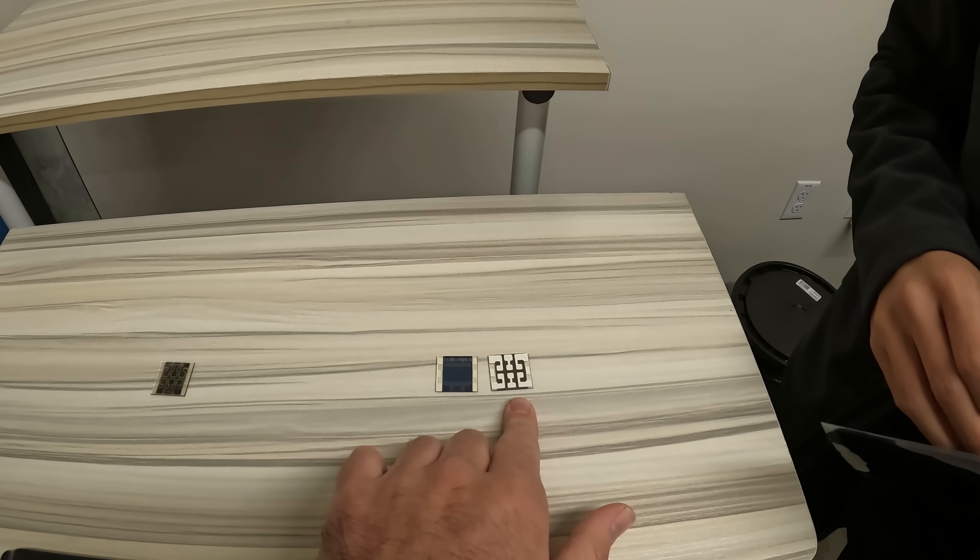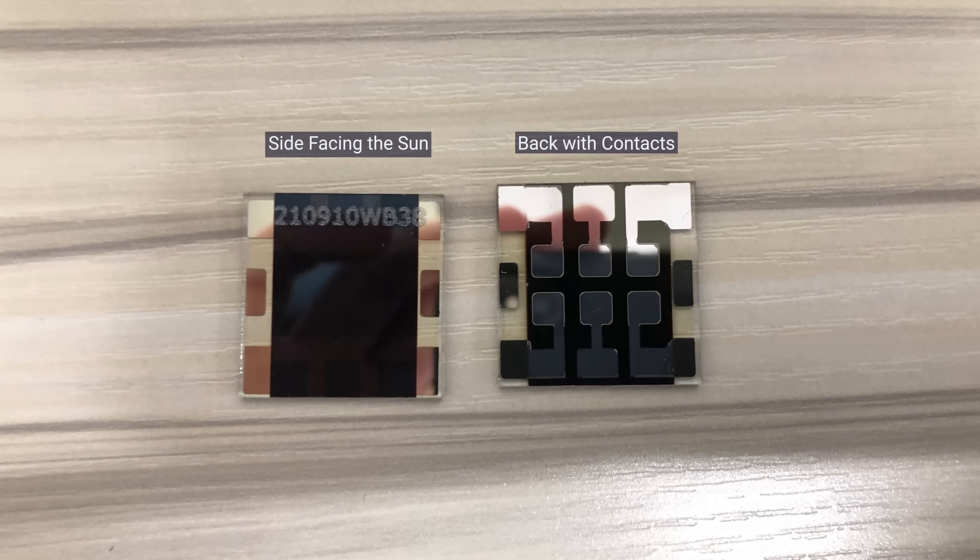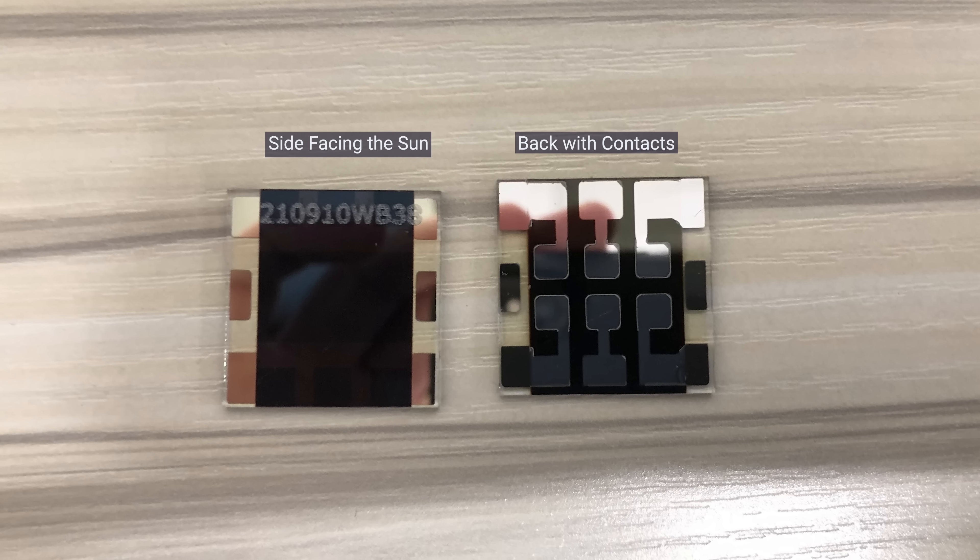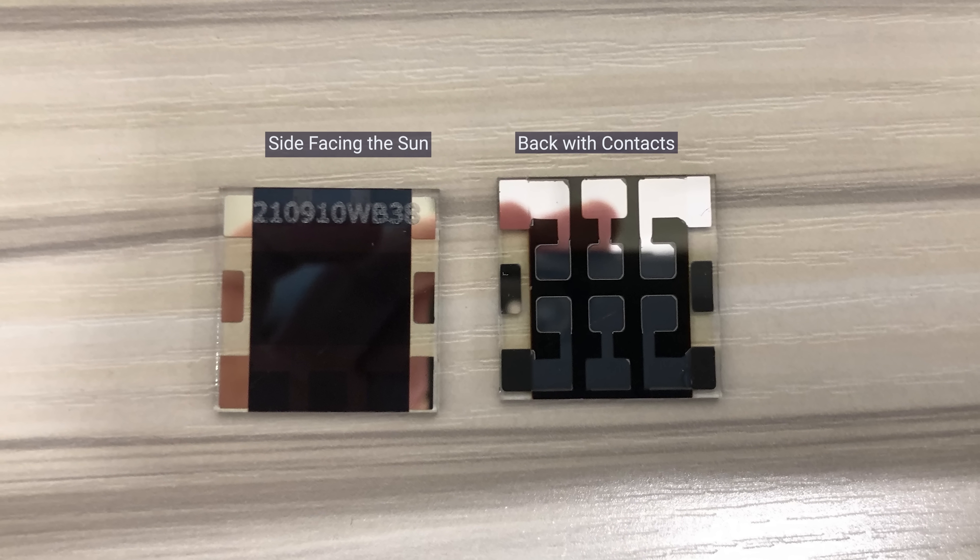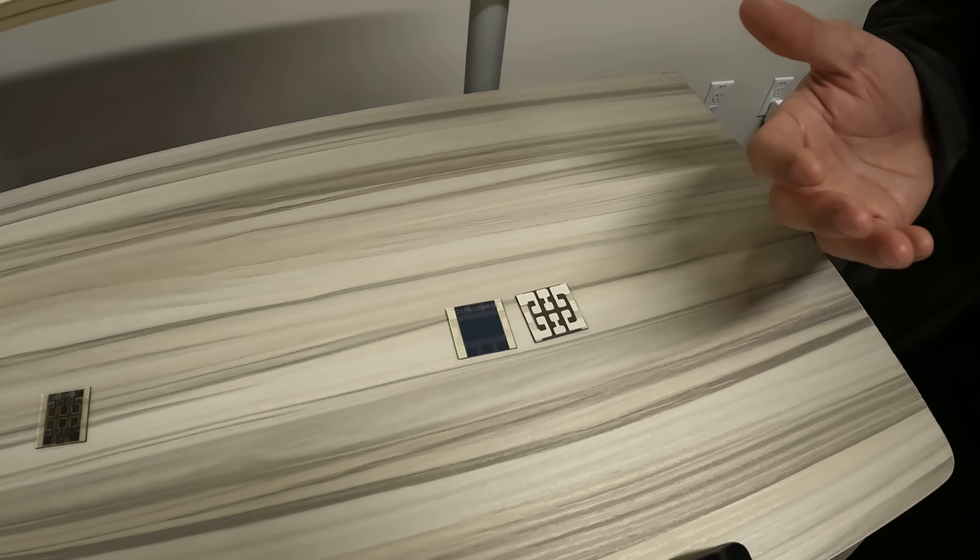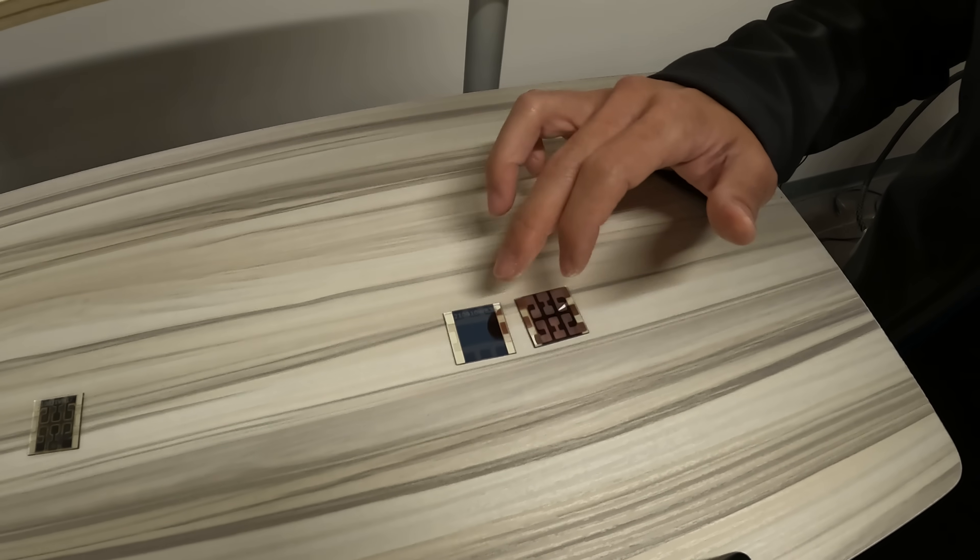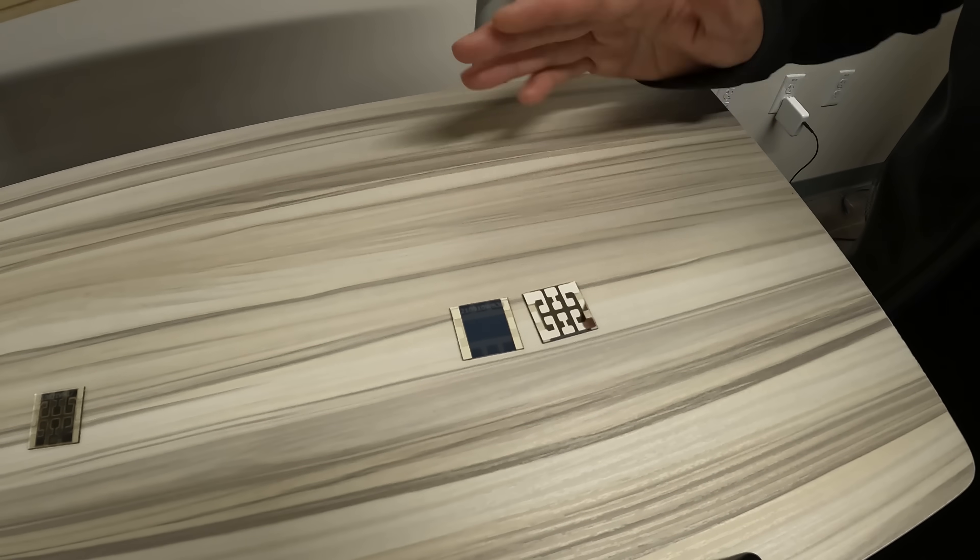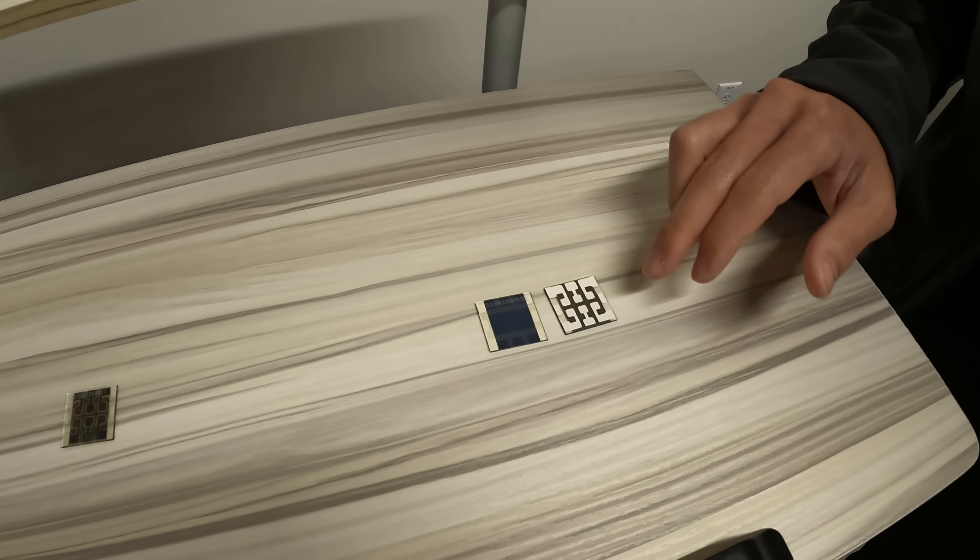Correct. The side facing the sun is actually you're looking through the glass. And on the other side of that glass, there's a perovskite layer kind of sandwiched between the contacts. So the contacts are what pull the charge out of the perovskite. So there's a transparent conductor on the side closest to us. Then there's the perovskite.